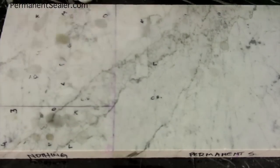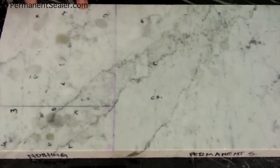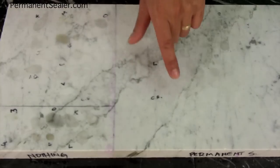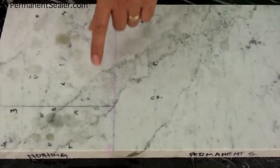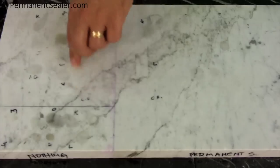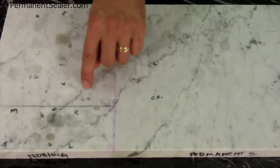But on this side with the 20-year sealer, pretty much everything etched or stained. Here we had more resistance. Chocolate sauce has nothing—no stain, no etches. The chocolate sauce here, there is a slight etch and there is a slight little stain over there. So again, this is your choice. This is how you are going to have to deal with your countertops if you get a white marble.